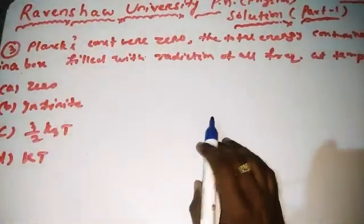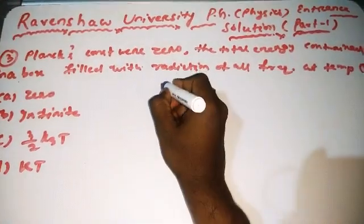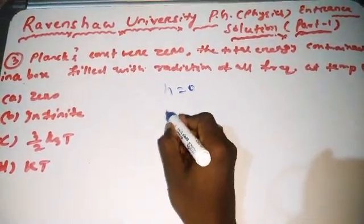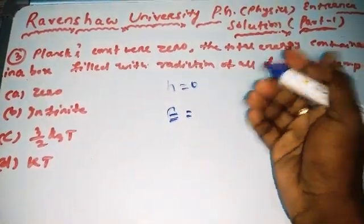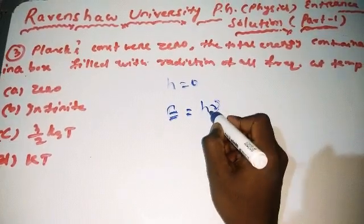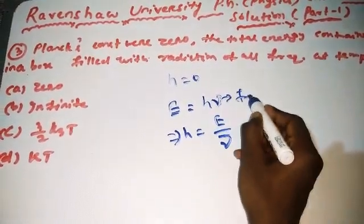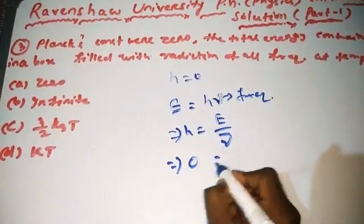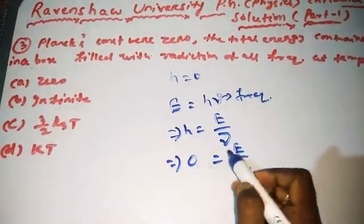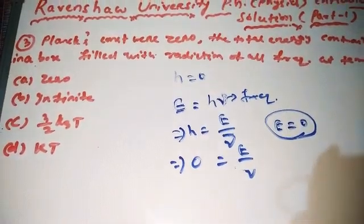Next, an interesting question: if Planck's constant h is equal to 0. A photon-type particle carries energy equal to hν (quantum mechanics: E = hν). So h = E/ν. If Planck's constant is 0, then 0 = E/ν, which means energy must be 0.